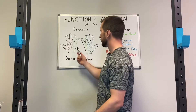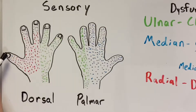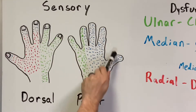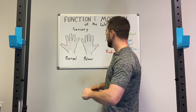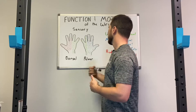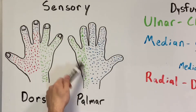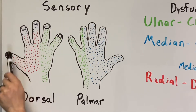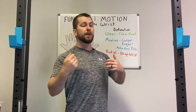For the median nerve, on the dorsal side of the hand you're really just getting the fingertips of the thumb, pointer, and middle finger, but on the palm the median nerve supplies the rest — all of the thumb, most of the palm, the pointer finger, middle finger, and even half of the ring finger. The radial nerve doesn't supply any sensory input from the palm; it's all on the dorsal side, covering the back of the thumb, pointer finger, and ring finger. The radial nerve is much more motor in function.